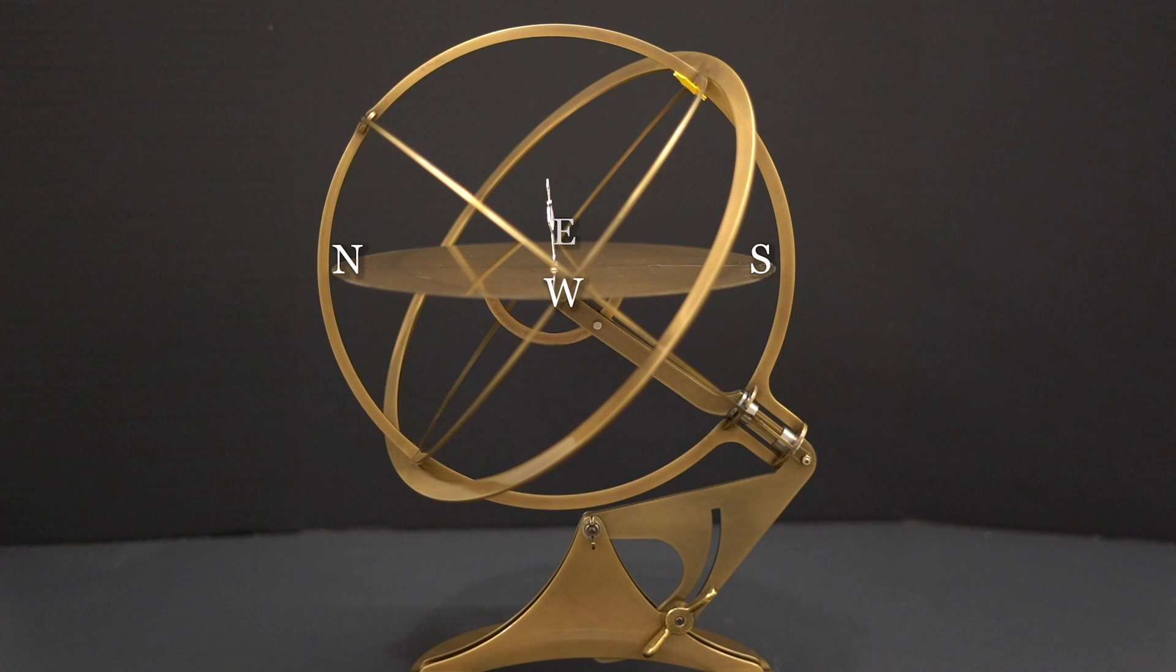For a northern hemisphere observer at a mid-latitude of 40 degrees, we can see the north celestial pole at an altitude of 40 degrees above the north point of the horizon. The celestial equator runs from the east point to the west point, crossing the observer's meridian at an altitude of 90 degrees minus the observer's latitude, so 50 degrees.